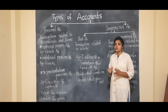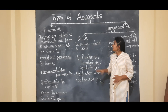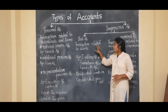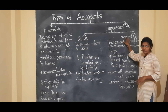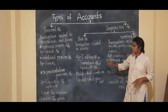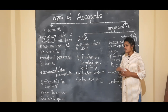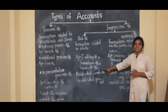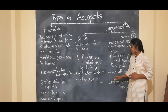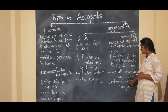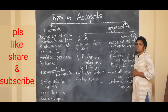Let's have a simple overview. Personal account covers individuals and firms accounts. Real account covers assets-related accounts. Nominal account covers income, gains, expenses, and losses accounts. Summary of rules — Personal account: debit the receiver, credit the giver. Real account: debit what comes in, credit what goes out. Nominal account: debit all expenses and losses, credit all incomes and gains.